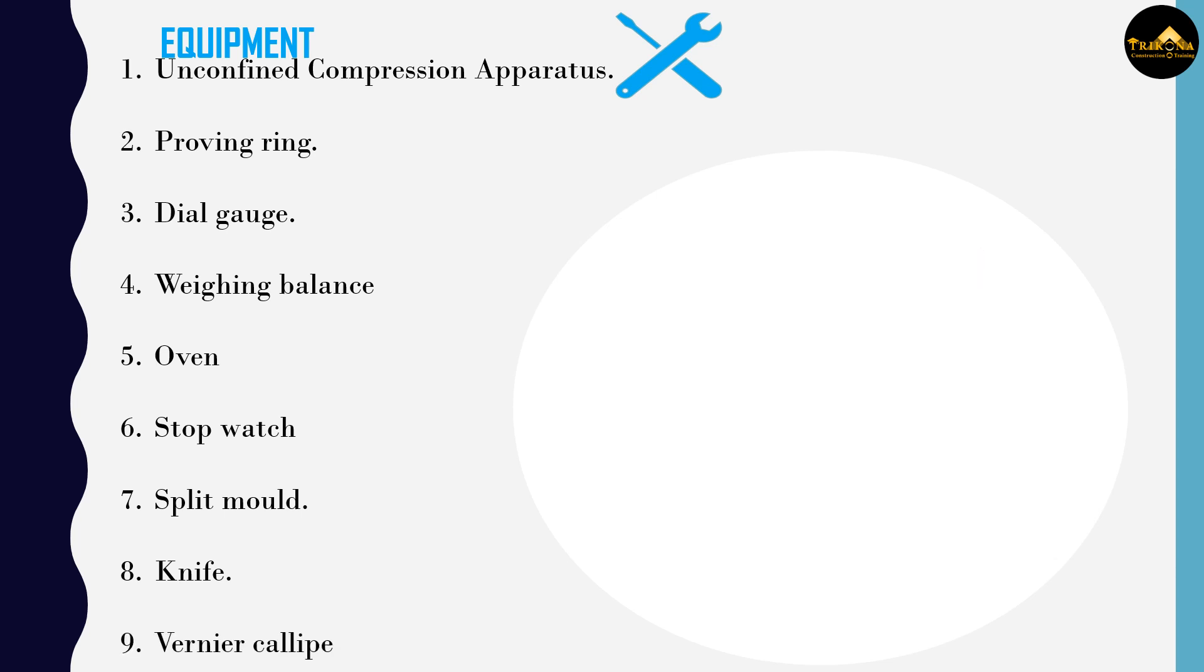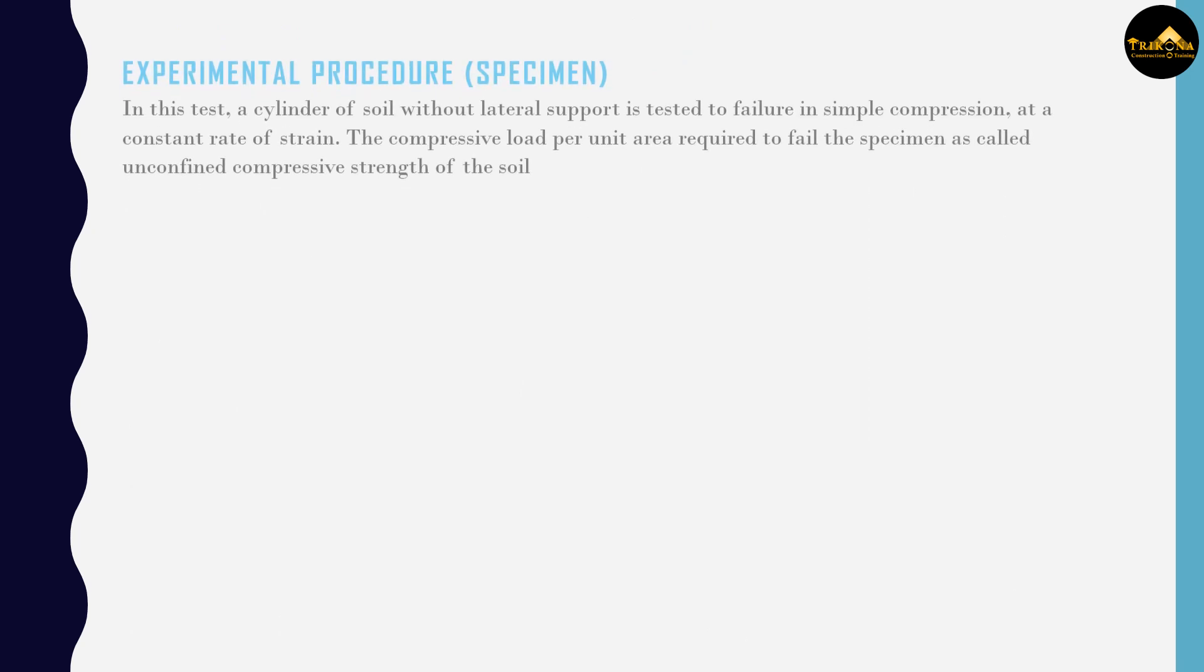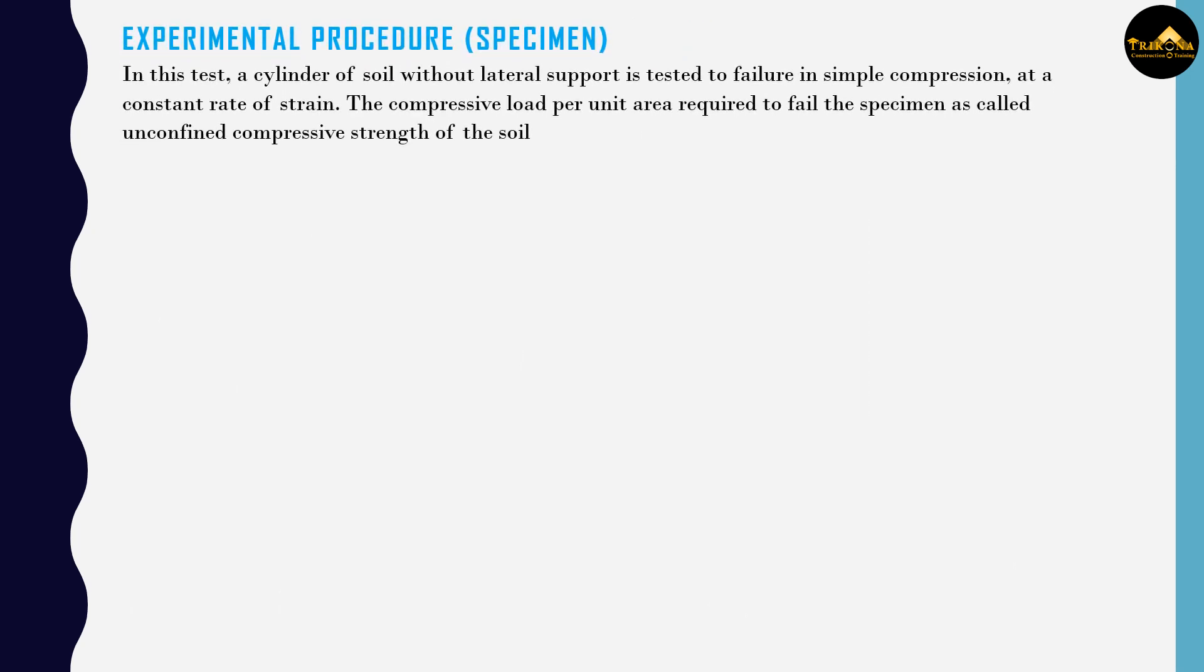Knife, vernier calipers. Experimental procedure - Preparation of specimen: In this test, a cylinder of soil without lateral support is tested to failure in simple compression at a constant rate of strain. The compressive load per unit area required to fail the specimen is called unconfined compressive strength of the soil. Preparation of molded sample for the desired water content and dry density.